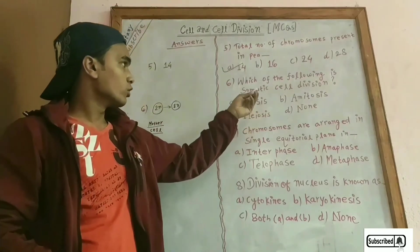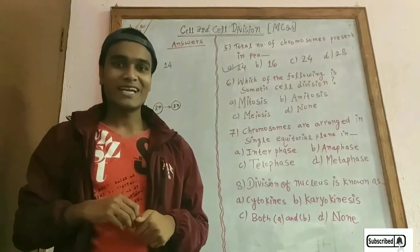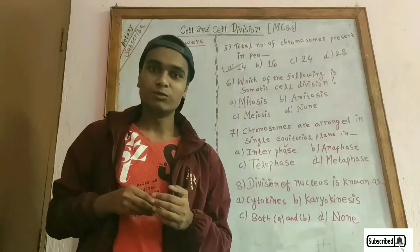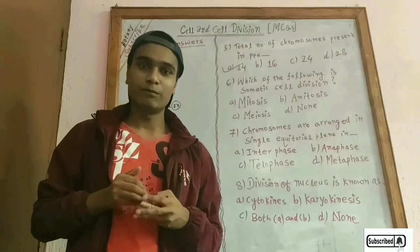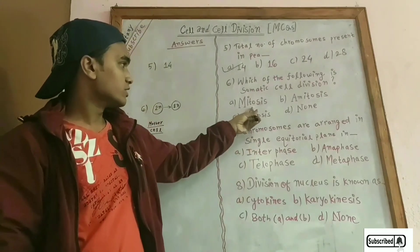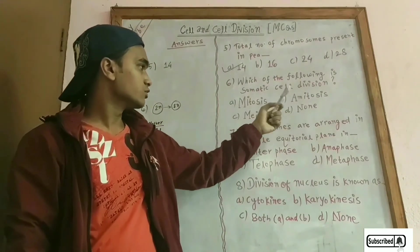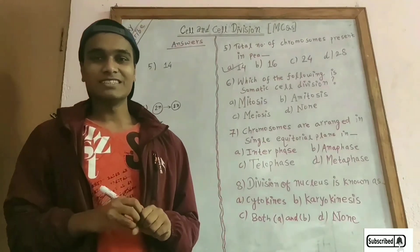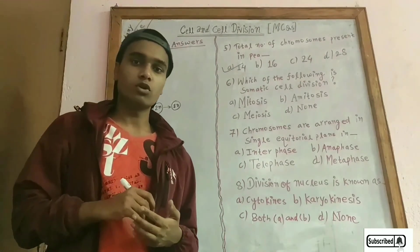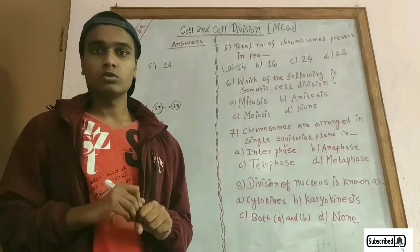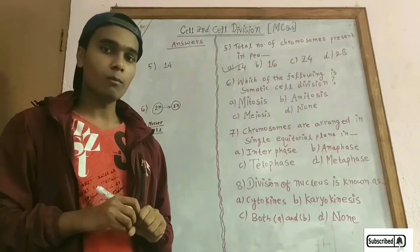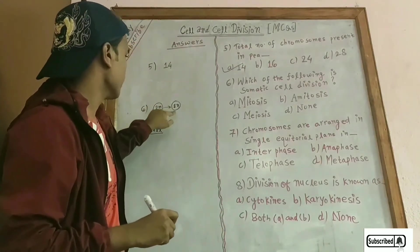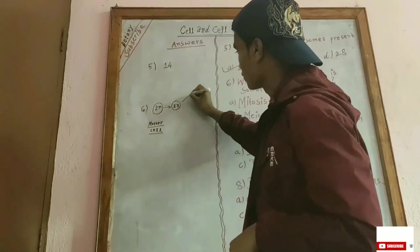Which of the following is somatic cell division? Somatic cell division is also called vegetative cell division, which is expressed in vegetative parts. The answer is mitosis. Mitosis is a type of cell division in which a mother cell divides into two daughter cells having an equal number of chromosomes.